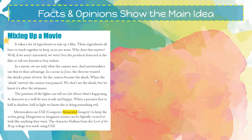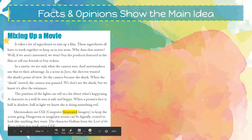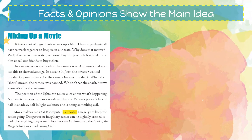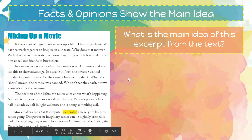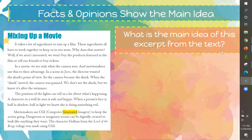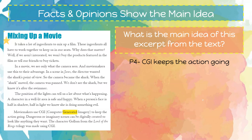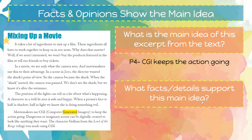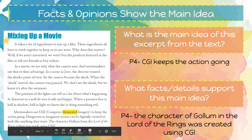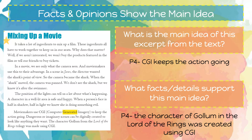'Movie makers use CGI — computer-generated imagery — to keep the action going. Dangerous or imaginary scenes can be digitally created to look like anything they want. The character Gollum from the Lord of the Rings trilogy was made using CGI.' The main idea of this paragraph is that CGI keeps the action going. The supporting fact the author gives is that the character of Gollum in Lord of the Rings was created using CGI — it would be very hard to keep the action going if that character wasn't created using CGI.